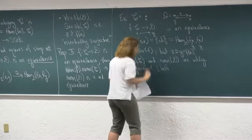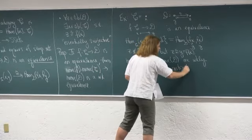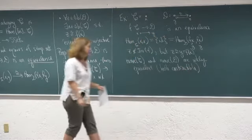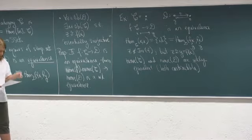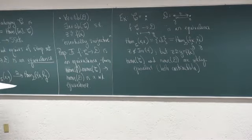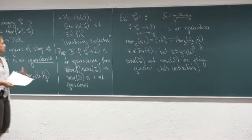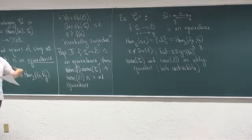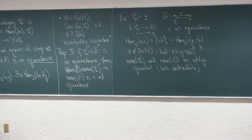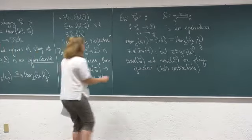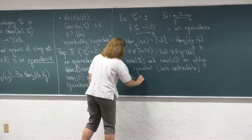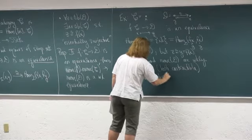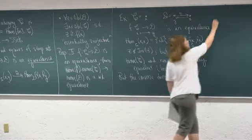If we pass to the nerve and then to geometric realization, we get the classifying space. Both C and D give contractible spaces, so the induced map is a map between two contractible spaces — certainly a weak equivalence. That's a nice property, and we might ask: what about the converse? If we have a functor between categories whose nerve gives a weak homotopy equivalence of simplicial sets, was the functor an equivalence of categories? The answer is no — the converse doesn't hold.